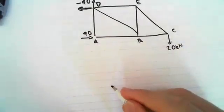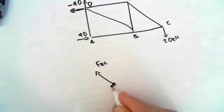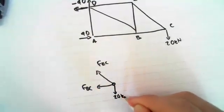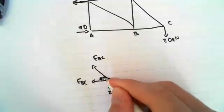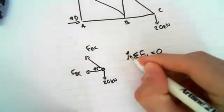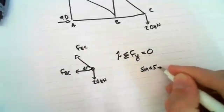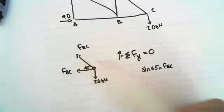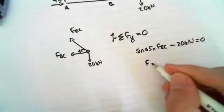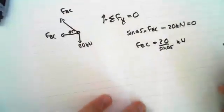So first up we have C I'm going to do. So we have C here. We have this FEC, FBC and 20 kilonewtons. So that's 45 degrees. So we can see that if we sum the forces in the y-direction equals zero. Upwards is positive. We get sine 45 times FEC. So this is taking the y component of FEC, minus 20 kilonewtons equals zero. FEC equals 20 on sine 45 kilonewtons.